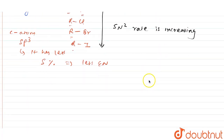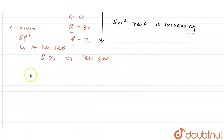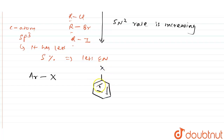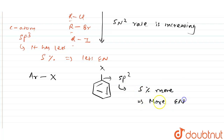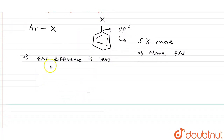But here we need to find the ArSN2 rate. In aryl halides, the halide is attached to a benzene ring, and that carbon atom is sp2 hybridized. The s-character is more compared to normal alkyl halides, which means higher electronegativity on the carbon atom. So the electronegativity difference between the halide and the carbon atom is quite less.